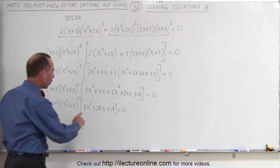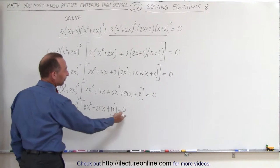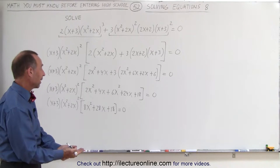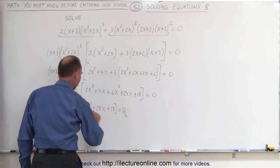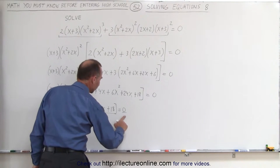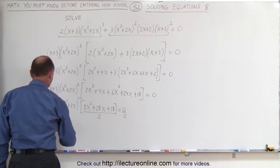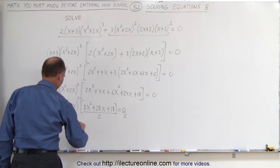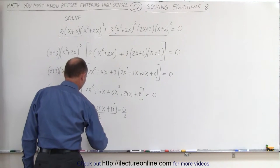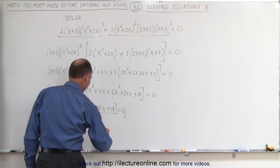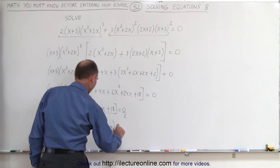Now notice, since all these coefficients are even, I could divide this by 2, and I can divide the right side by 2. Of course when I divide the right side by 2, I get 0 divided by 2, which is still 0. So we're going to divide this by 2 and divide that by 2. That ends up looking like this: x plus 3, times x squared plus 2x, times the quantity 4x squared plus 14x plus 9, and that equals 0.